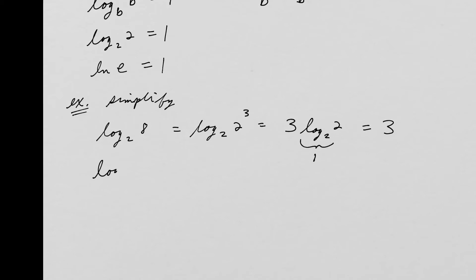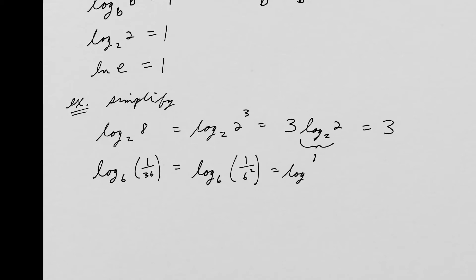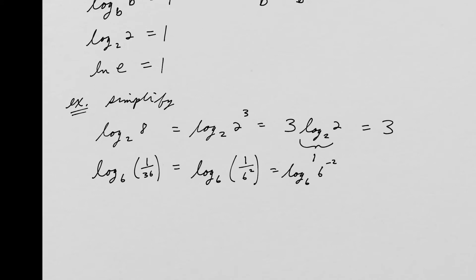What about log base 6 of 1/36? I write 1/36 as 1 over 6 squared, which is 6 to the negative 2. Using the exponent property, I bring the negative 2 out front: negative 2 times log base 6 of 6. Since log base 6 of 6 equals 1, this equals negative 2.